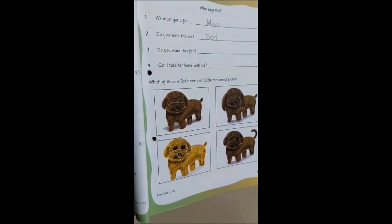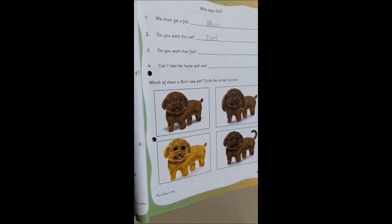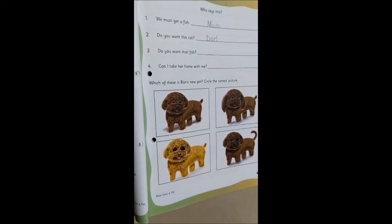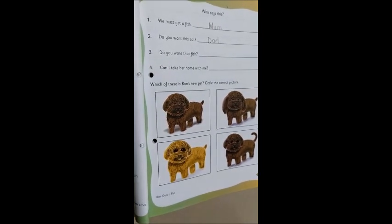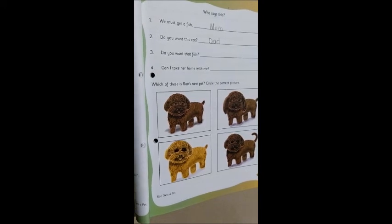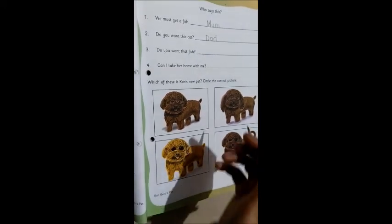Now, the next one. Do you want that fish? Yes, mom surely will be saying this. Because mom has said, we must get a fish. So, do you want that fish? Who is saying? Mum. So, again we write mum.